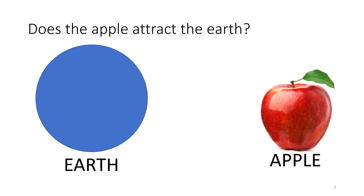It is seen that a falling apple is attracted towards the earth. Does the apple attract the earth? If so, why do we not see the earth moving towards the apple? According to Newton's third law of motion, the apple does attract the earth. But according to Newton's second law, for a given force, acceleration is inversely proportional to the mass of the object — F = ma, so a = F/m. The mass of the apple is negligibly small compared to that of the earth, so we do not see the earth moving towards the apple.